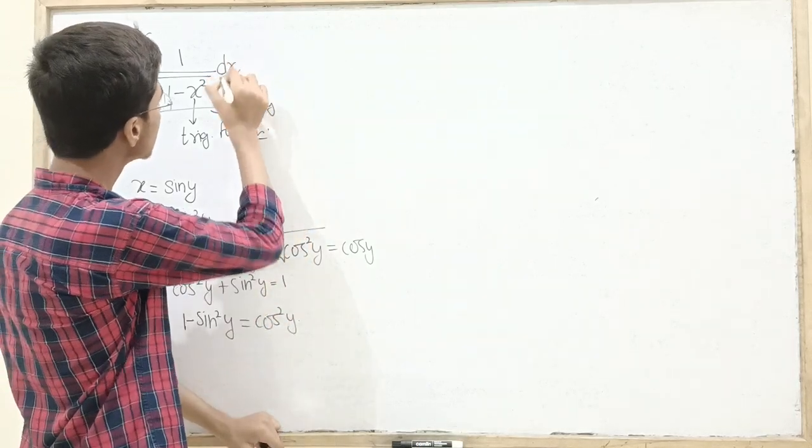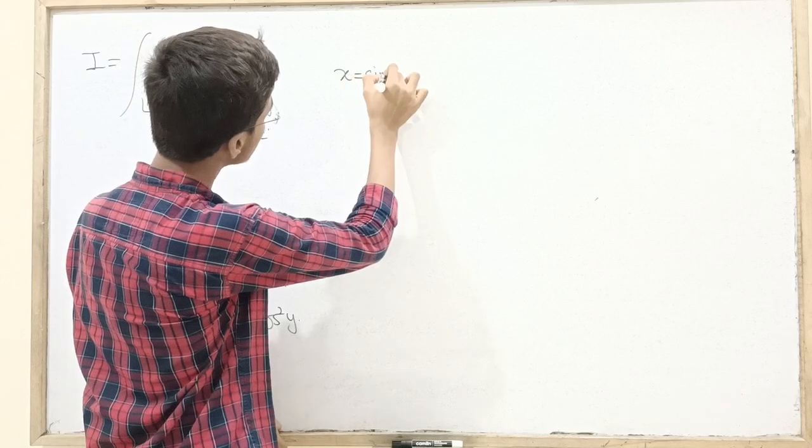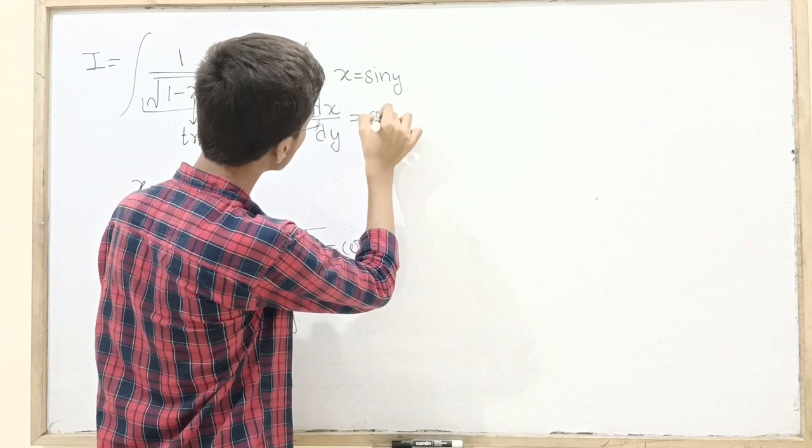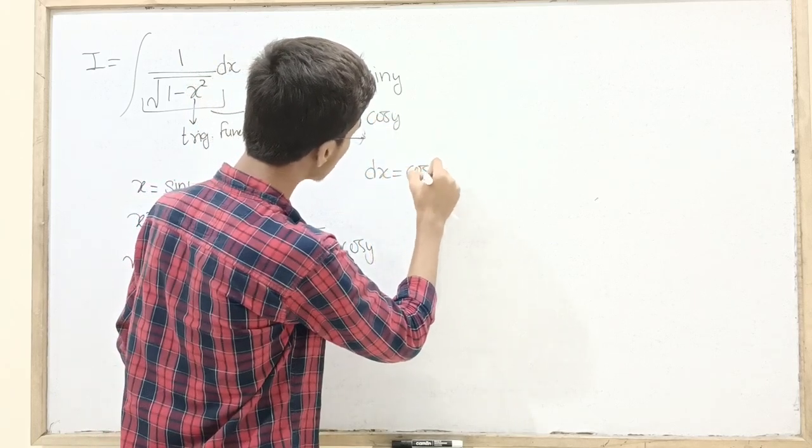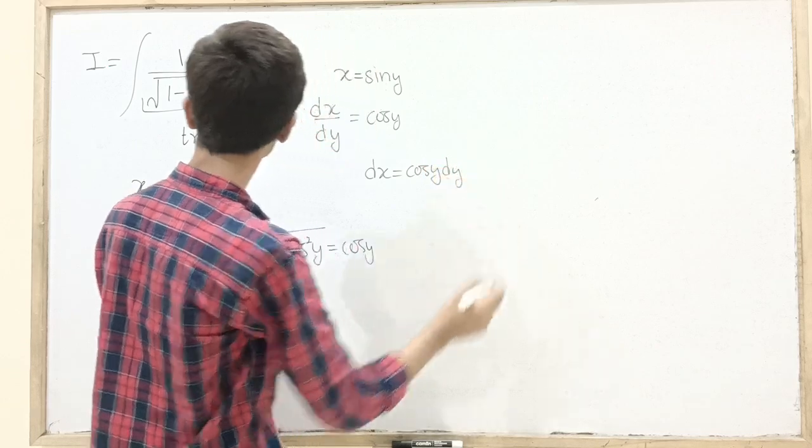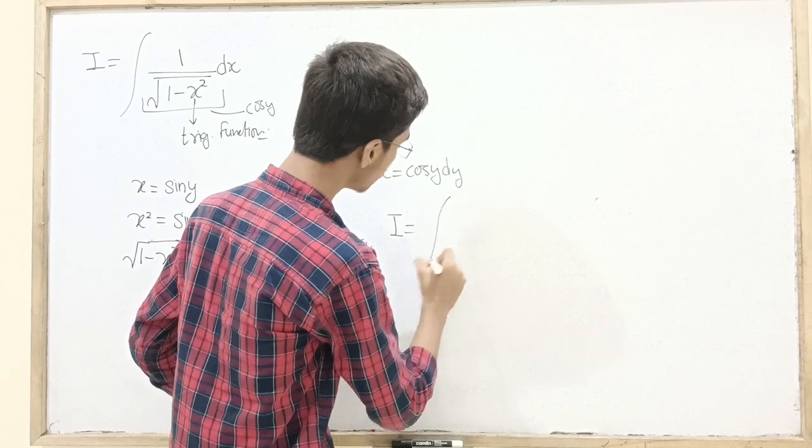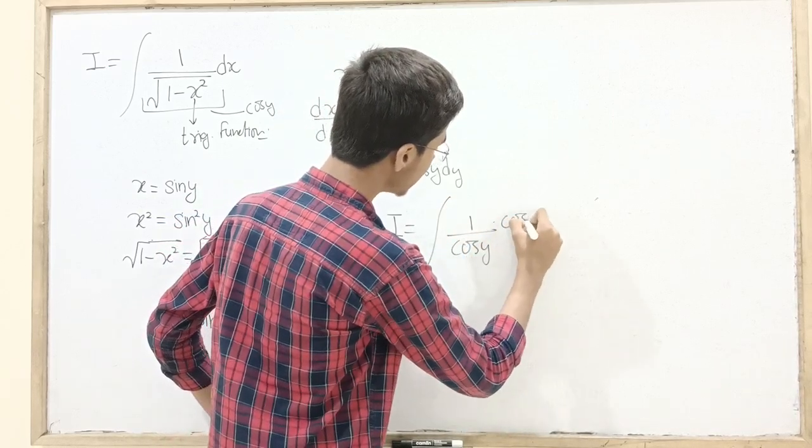Now we do here that dx. Since x you wrote as sin of y, then you differentiate it. dx by dy will be cos y, meaning dx should be equal to cos y dy. So now over here, this integral becomes the integral of 1 by cos y times cos y dy.